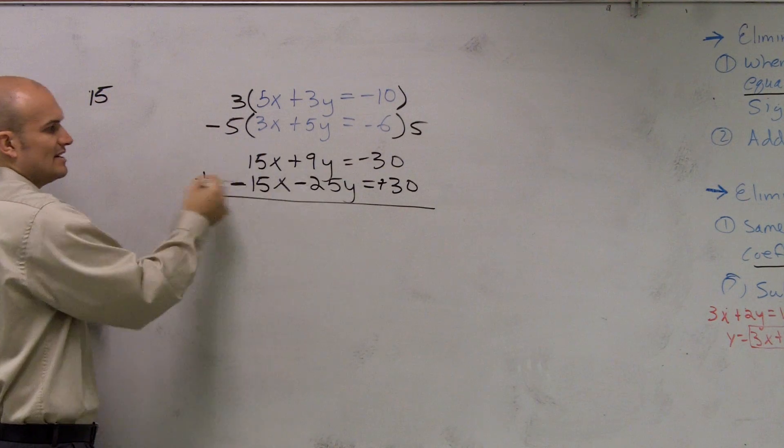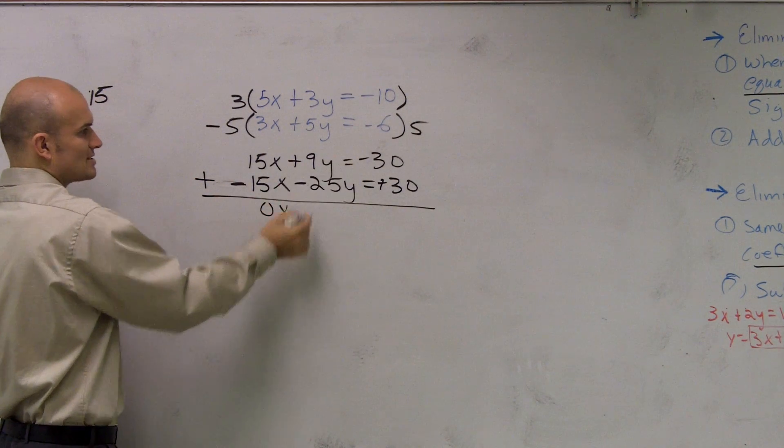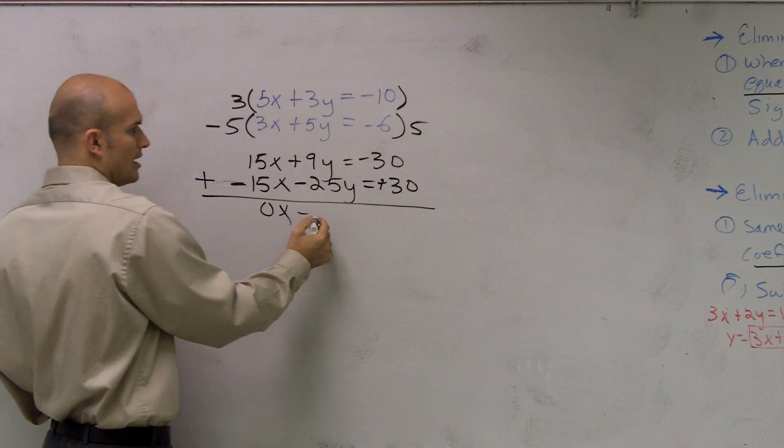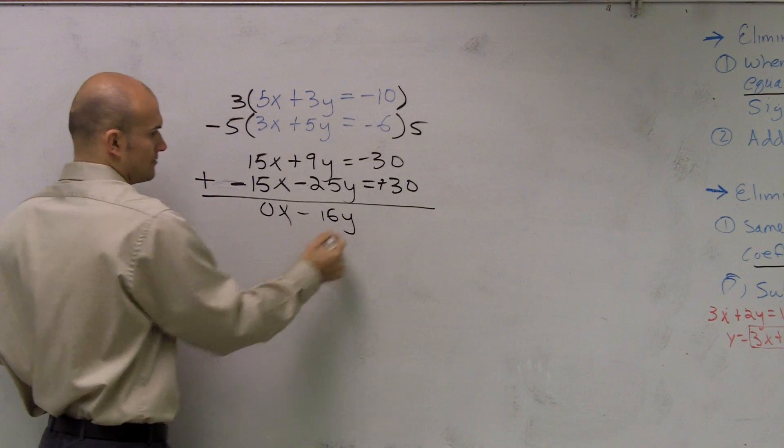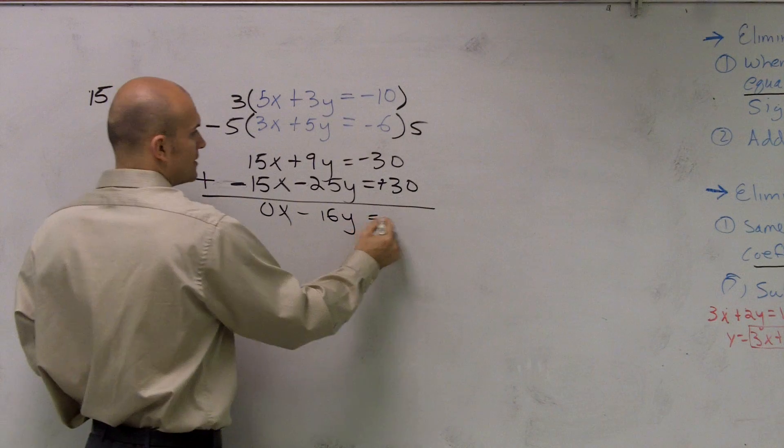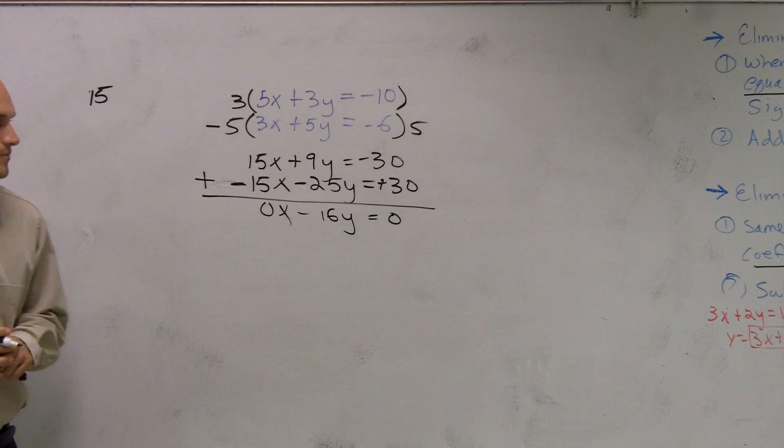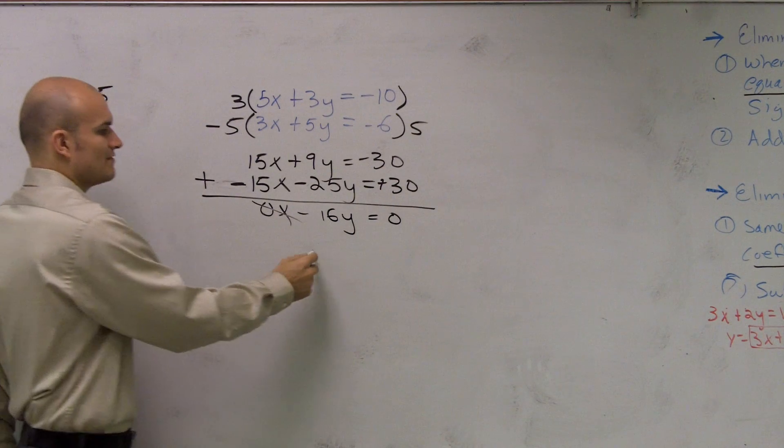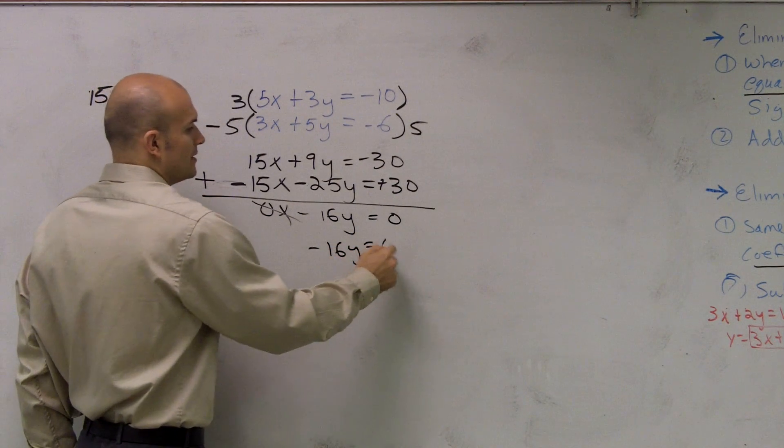So I do this, 15x plus negative 15x is 0x. 9y plus negative 25y is negative 16y equals 0. Then I have eliminated my variable because I have the same number, so I have negative 16y equals 0.